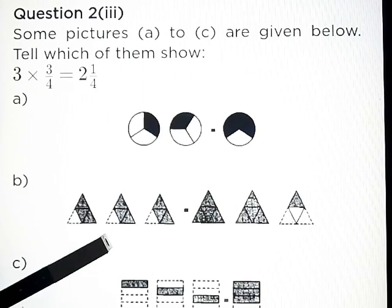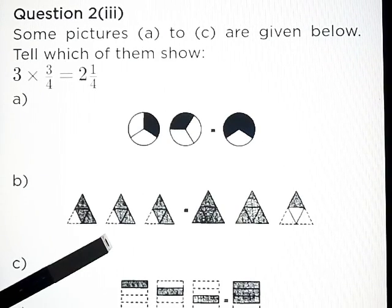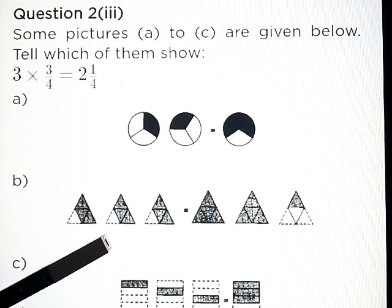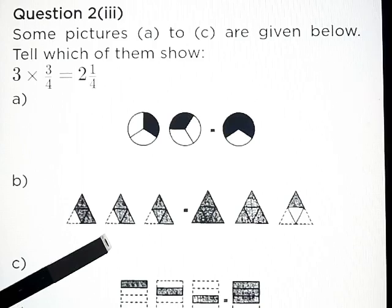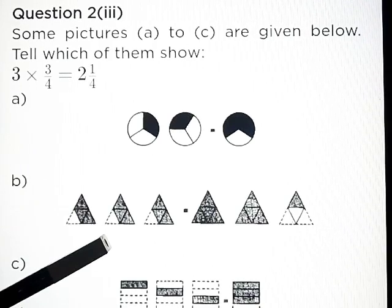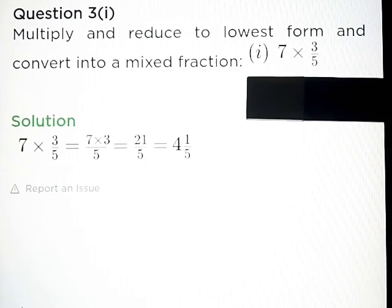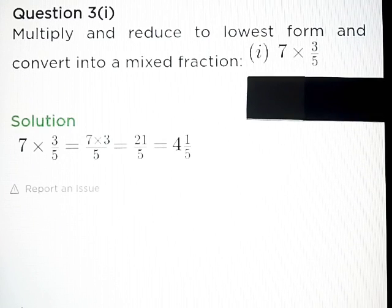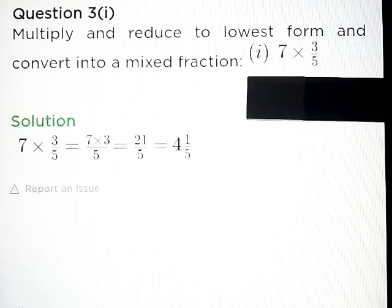Part C: 3 into 3 upon 4 is equal to 2 into 1 upon 4 — answer represented by part B. Question number 3, Part A: Multiply and reduce to lowest form and convert into a mixed fraction.